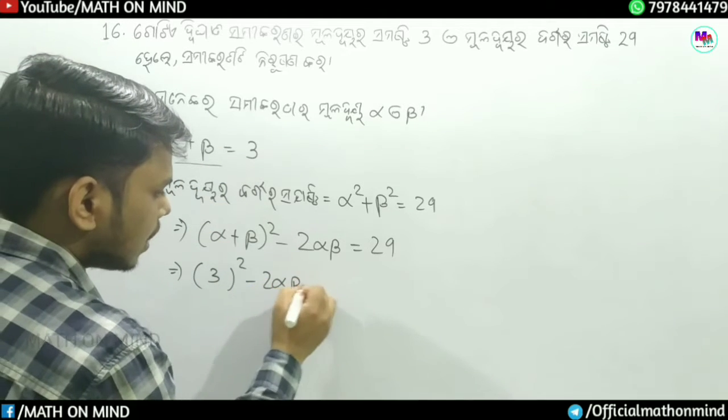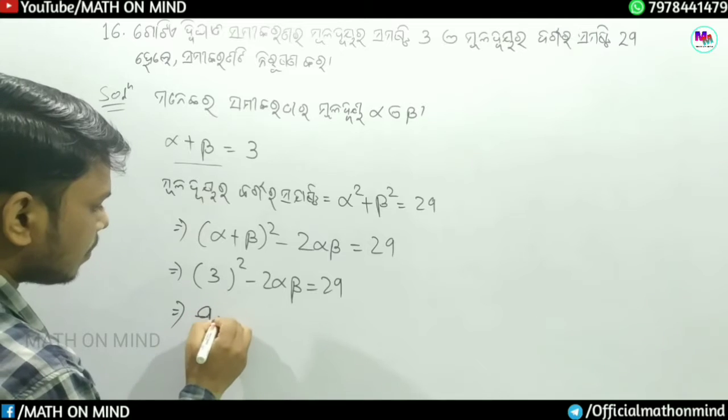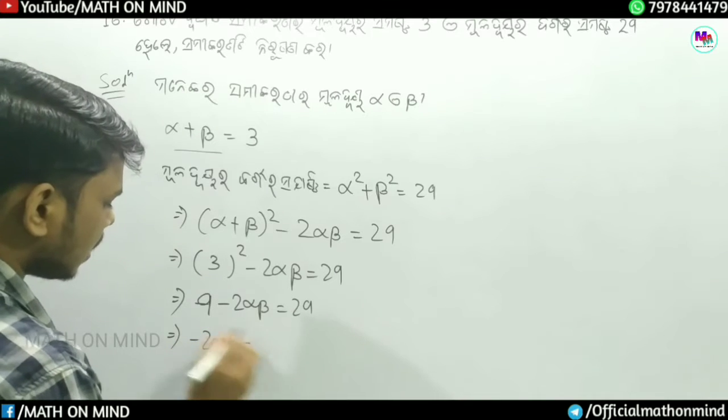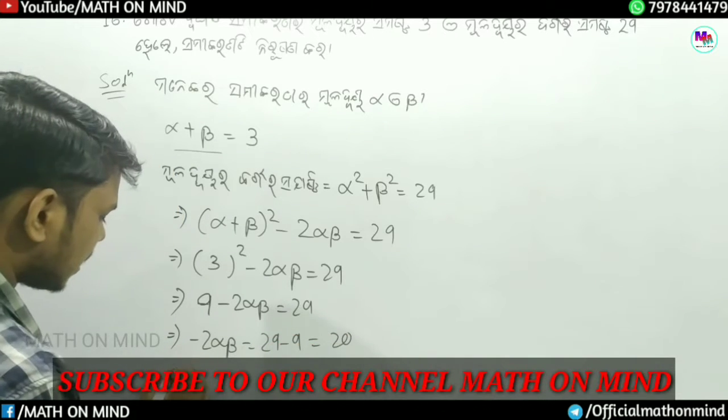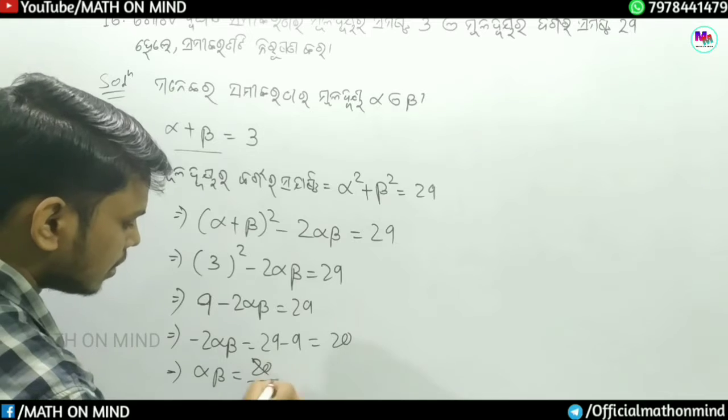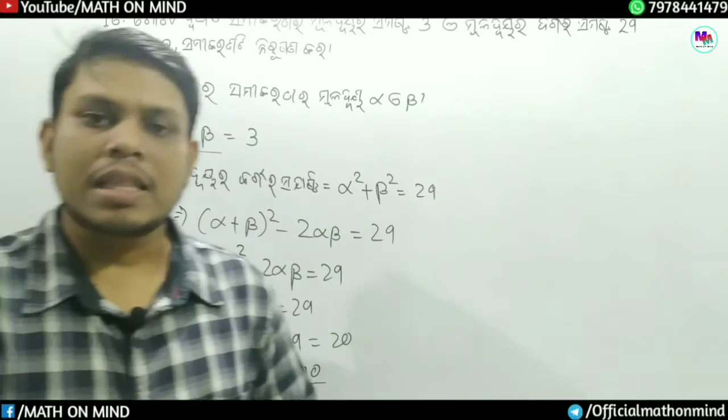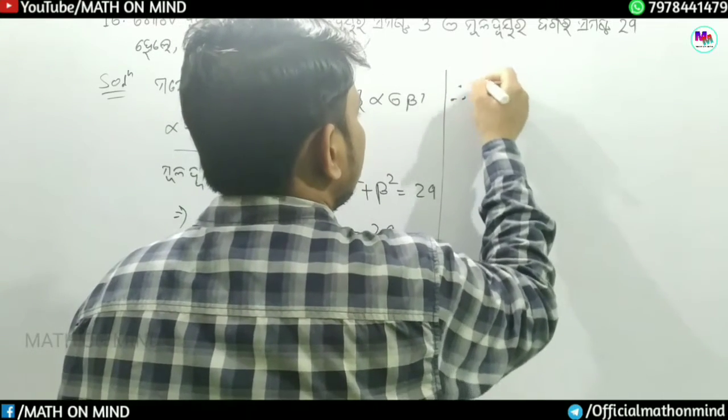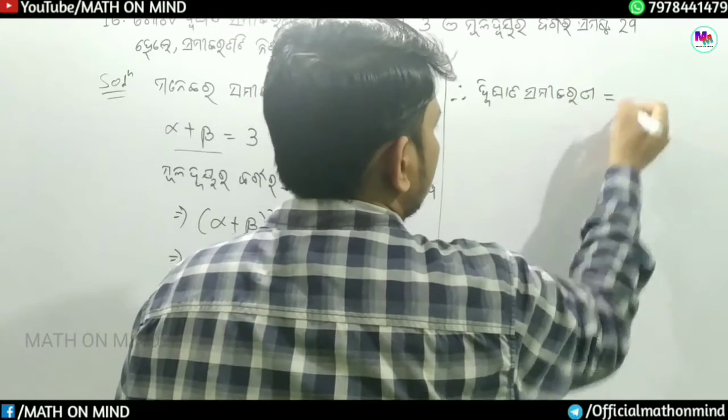So minus 2 alpha beta equals 29 minus 9, that is 20. Therefore alpha into beta is equal to 20 divided by minus 2, which equals minus 10.